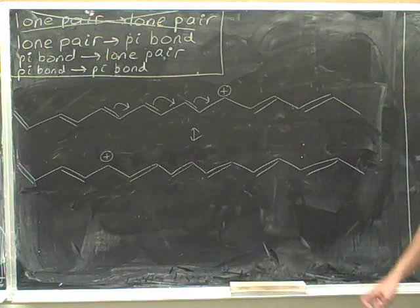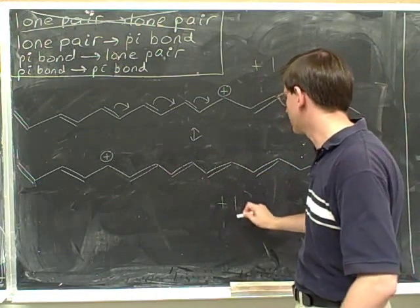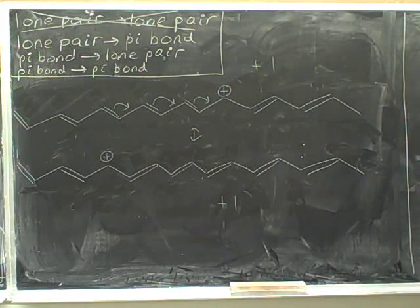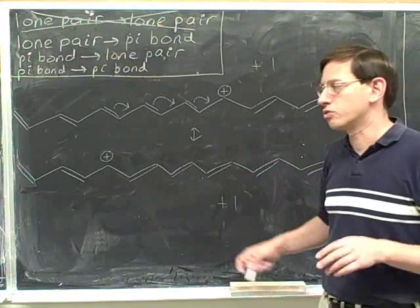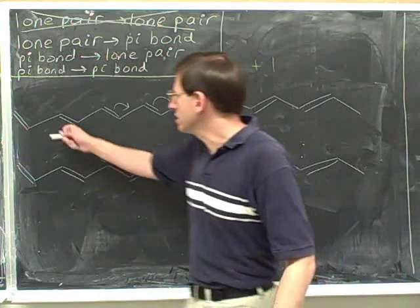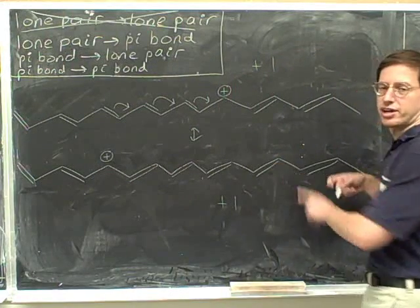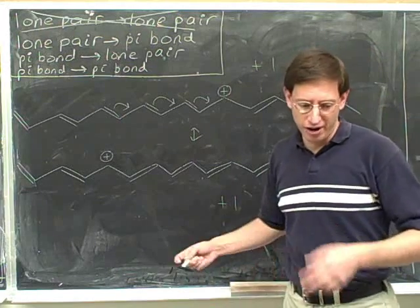As always, now we have to check the charges. The net charge in the top picture was plus one, and the net charge in the bottom picture is plus one. So the charges balance. Make sure that you do not make any modifications where there are no arrows. These two pi bonds are totally untouched. And these two pi bonds are totally untouched. You should only modify where there are arrows.